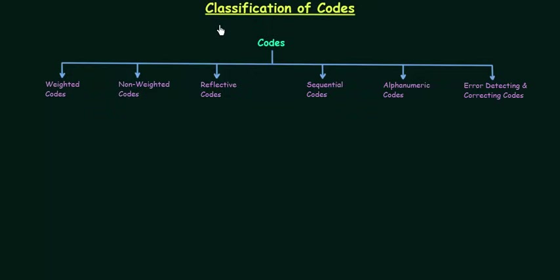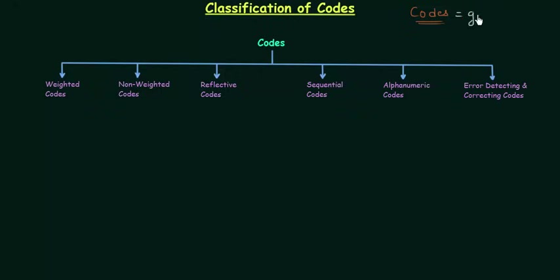From this lecture we will start a new chapter: Codes. In the first lecture we will do the classification of codes. The codes are broadly classified into six categories, but before moving to them, we will try to understand what we mean by code. When numbers or letters are represented by a specific group of symbols, the numbers or letters are encoded and the group of symbols is called a code. So simply, a code is a group of symbols.